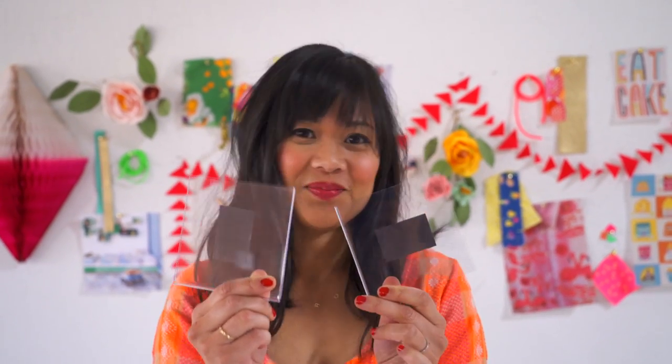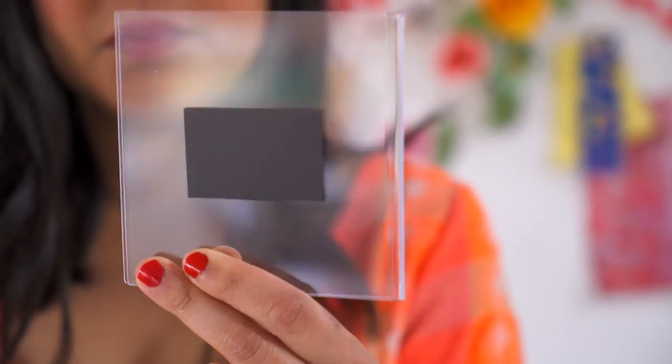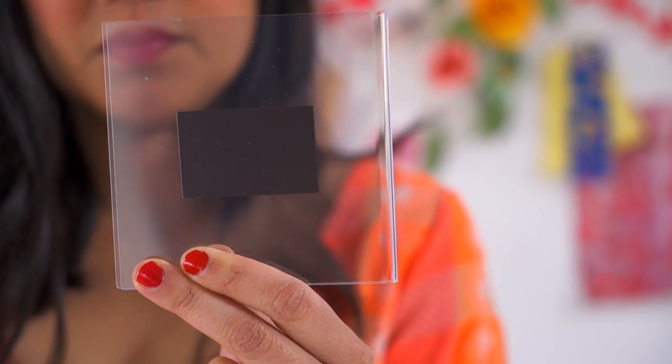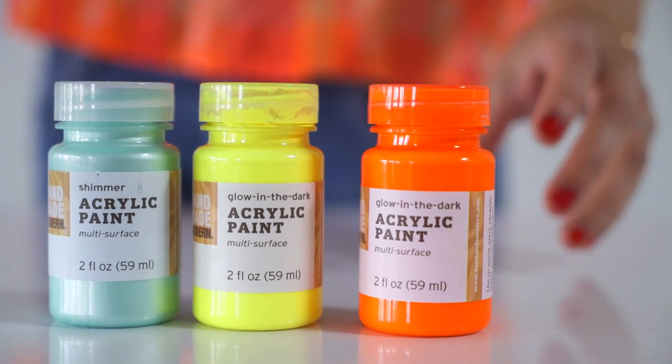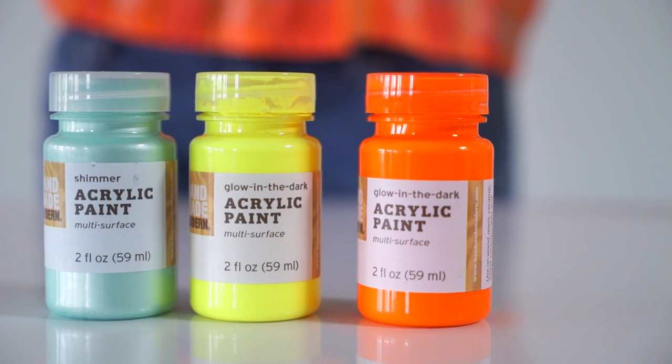To start, you'll need acrylic magnetic picture frames. We used ones that were sized 4 by 4 inches, acrylic paint - we used a shimmery aqua, neon orange, and neon yellow.